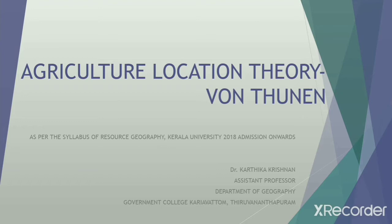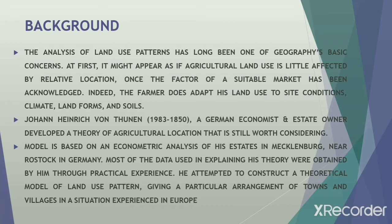Welcome back. Geographic land use, especially agricultural land use, is one of the prime factors that determine the economy of our society. Hence, the analysis of land use patterns has long been a concern of geographers. Initially, it was felt that agricultural land use is little affected by relative location once a suitable market has been found. Later, it was proved that the farmer adapts his land use not only on the basis of market, but also based on physical, climate, landform, and soil factors.